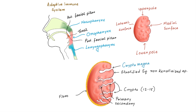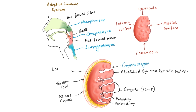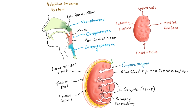The lateral surface of the tonsil is covered by a fibrous capsule and the tonsillar bed is separated from the capsule by a loose areolar tissue. This is of clinical importance because due to this areolar tissue it is easy to dissect the tonsil from its bed during tonsillectomy. It is also the site of collection of pus in peritonsillar abscess, which is also called Quinsy.